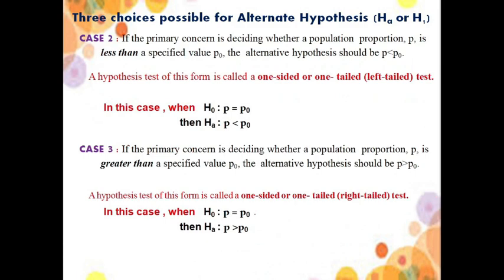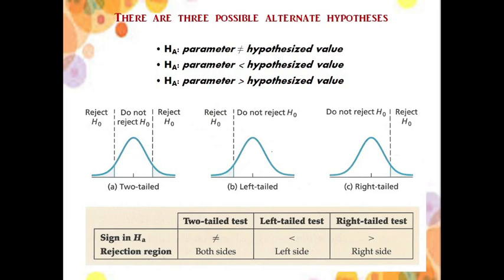In this slide you can see case 2: if the primary concern is deciding whether a population proportion p is less than a specified value p0, the alternative hypothesis should be p < p0 — a one-sided left-tailed test. In case 3, if p is greater than p0, this is also a one-sided right-tailed test. You can see in the diagram of two-tailed test that both tails appear in the right and left directions.